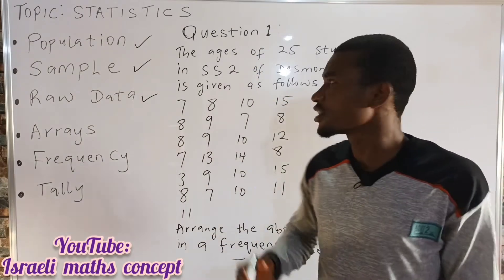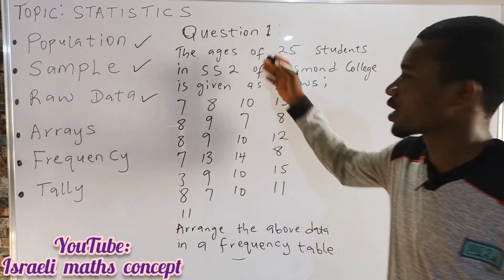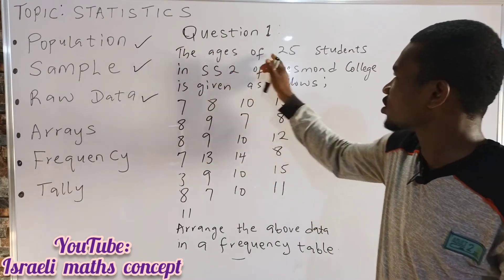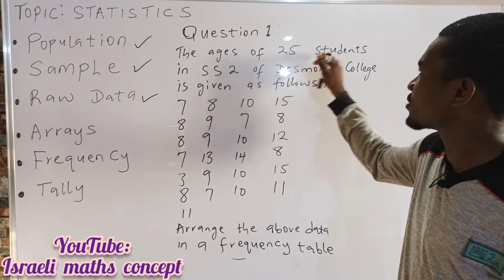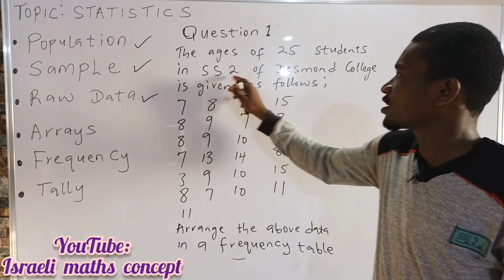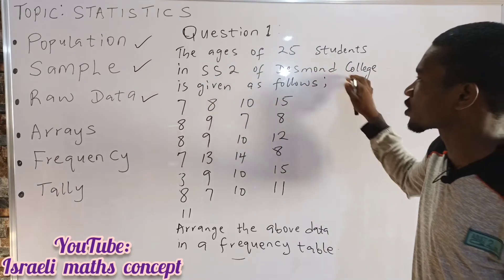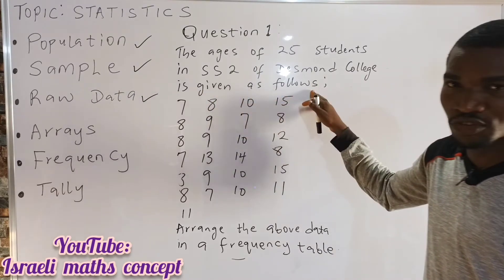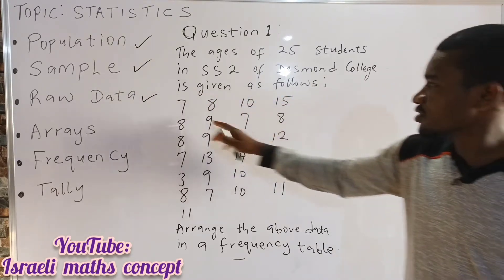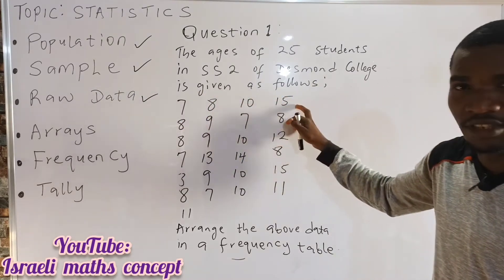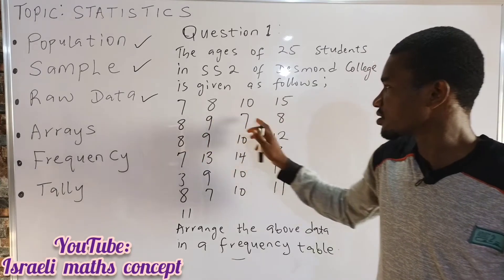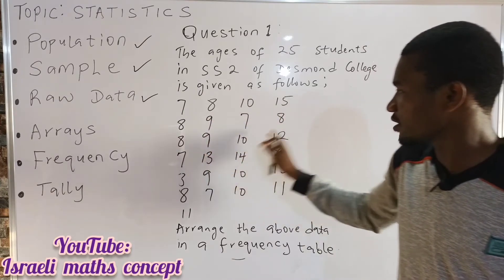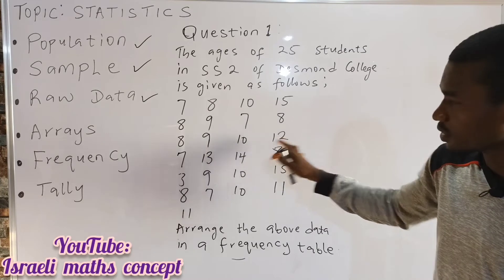Let's read out the question on the board. Question number one says: the ages of 25 students in SS2 of Desmond College are given as follows: 7, 8, 10, 15, 8, 9, 7, 8, 8, 9, 10, 12, 7, 13, 14, 8...